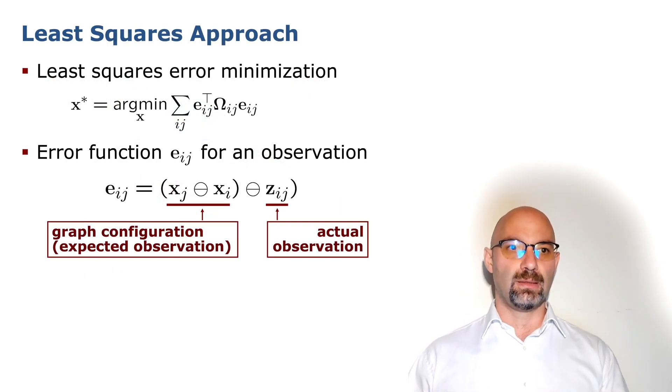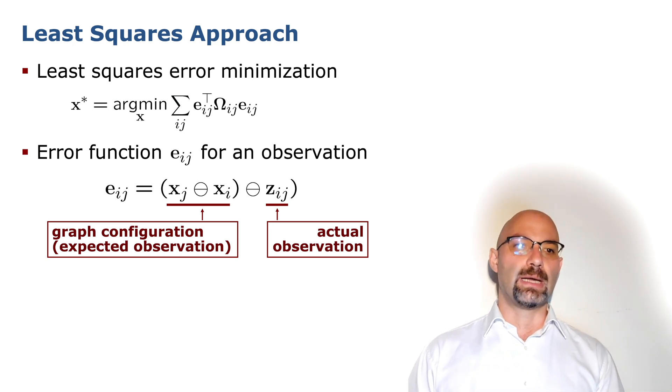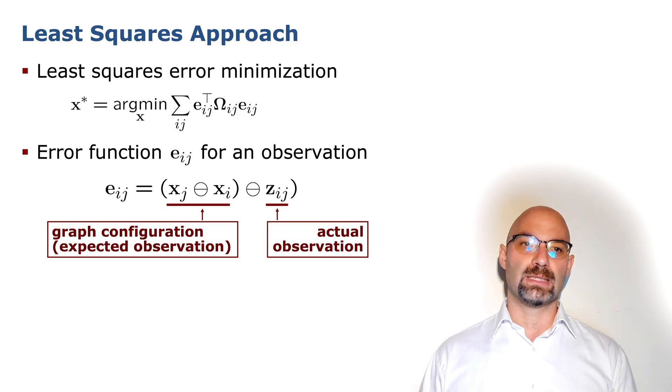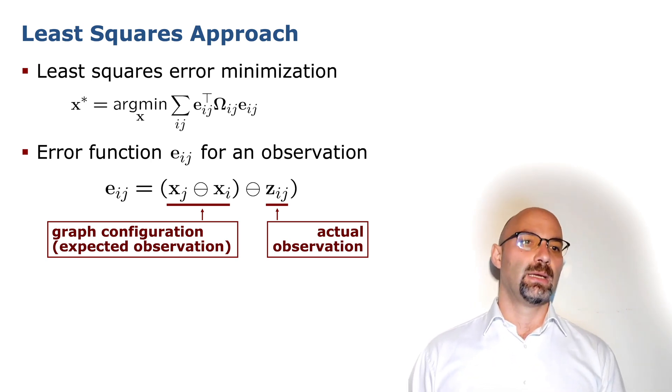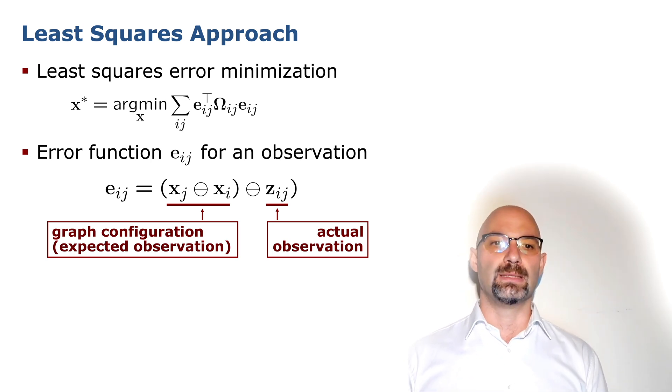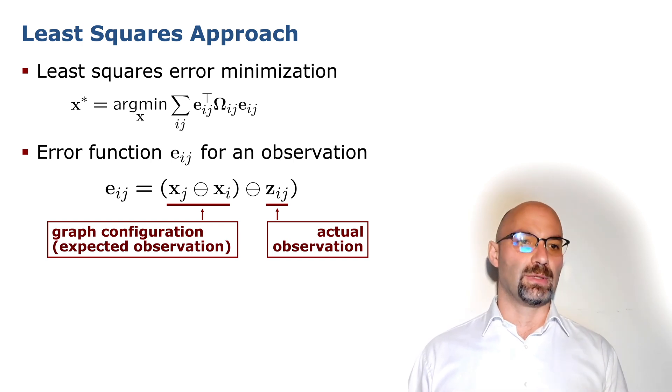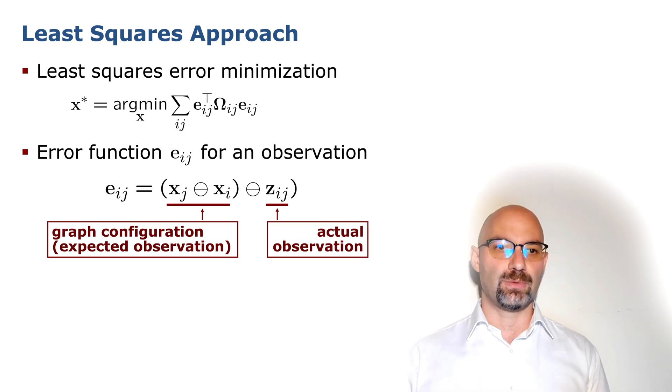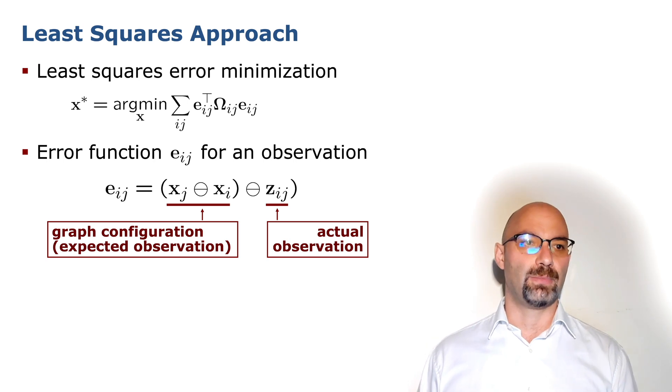We immediately see that we could solve this problem by bringing the node xj in the middle of the blue ellipse. Therefore, we would be zeroing the error vector. But in general, a SLAM problem contains many variables and many edges that do not agree with each other. However, finding the global configuration x star that minimizes the squared error norm of all errors would lead to potentially the maximally consistent trajectory, at least in terms of the measurement that we put in the problem. Let's now look a little bit inside one of these error functions and we can distinguish clearly two aspects.